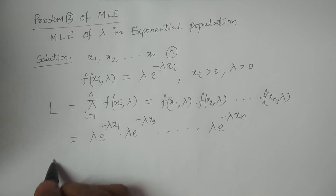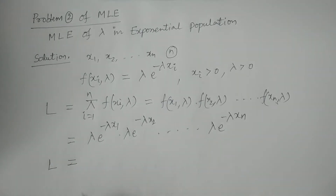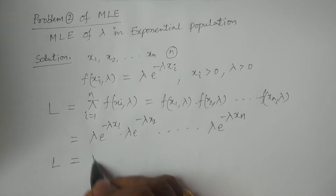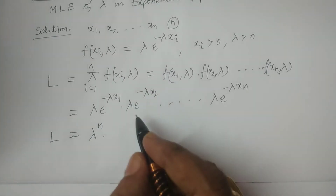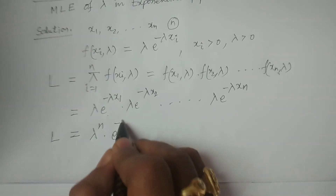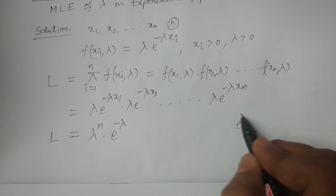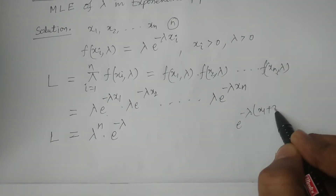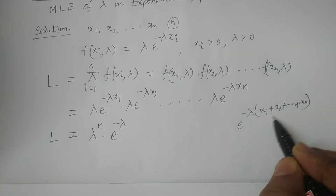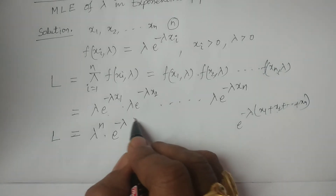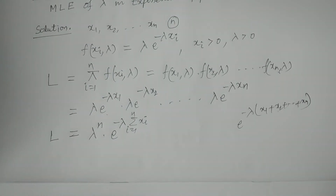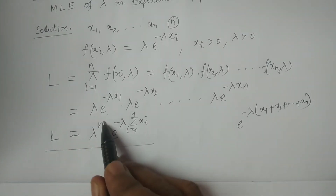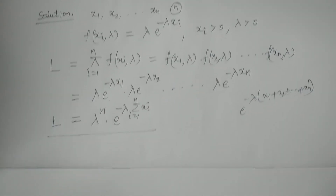Therefore, L can be expressed as lambda multiplied n times — that is lambda^n — multiplied by e^(minus lambda), taking the exponential terms together as e^(minus lambda · (x1 + x2 + ... + xn)), that is e^(minus lambda · summation xi from i=1 to n). So finally, L = lambda^n · e^(minus lambda · Σxi).